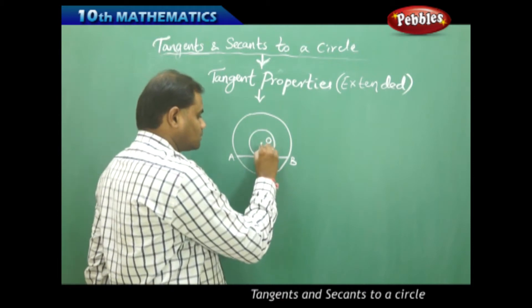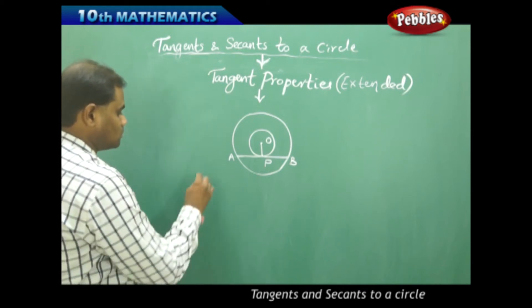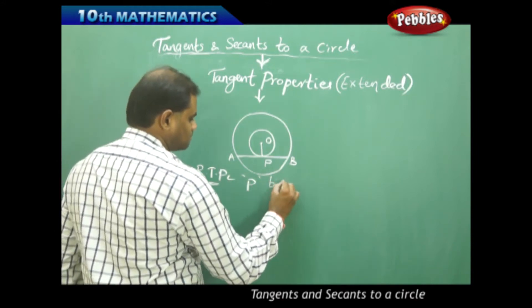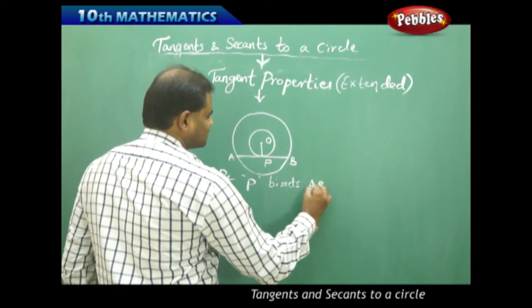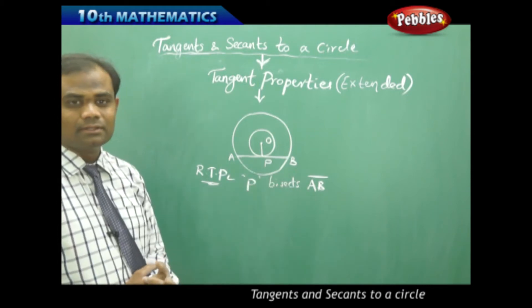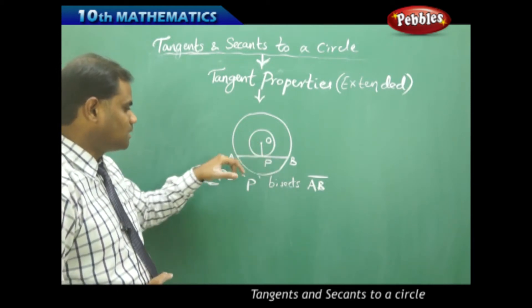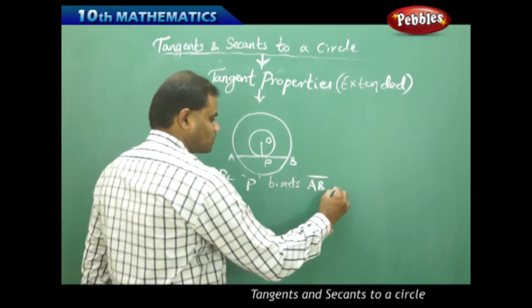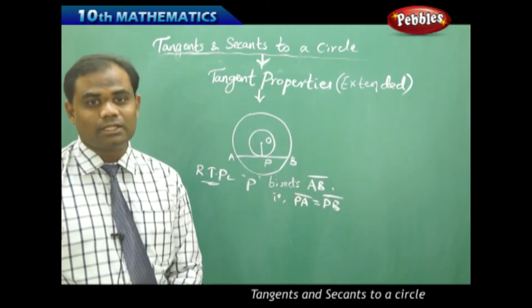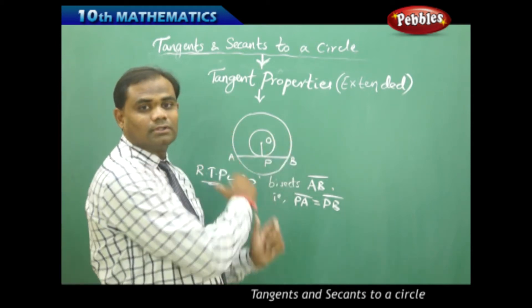Now let me join OP. I need to prove that P bisects AB — that is, the point of contact always bisects the chord AB. So I have to prove that PA is equal to PB in the case of these concentric circles with the bigger circle and the smaller circle.